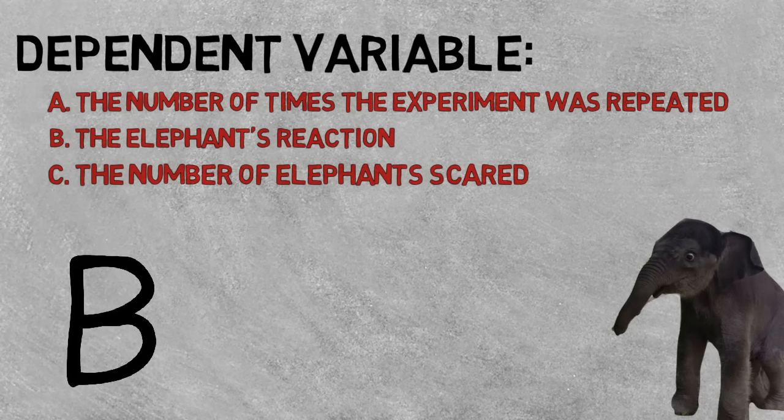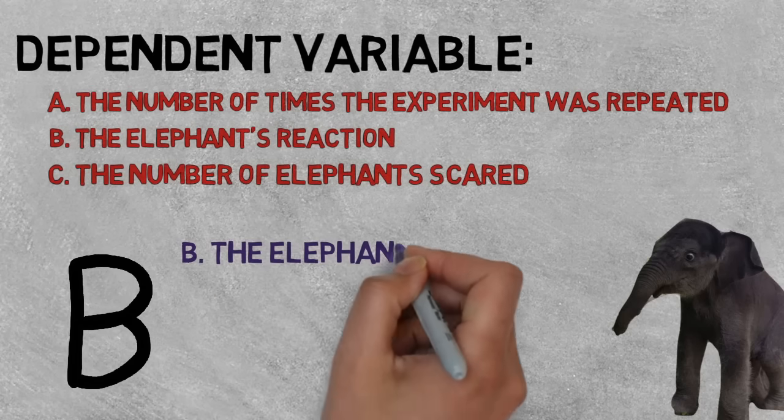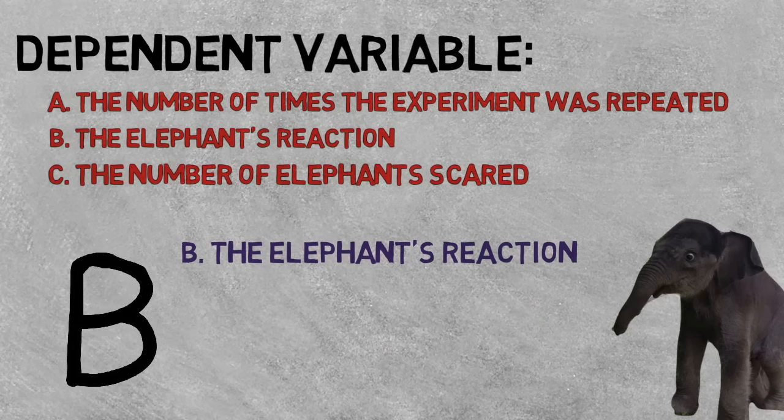The correct answer is B, because it is the reaction of the elephant that was being measured each time the experiment was carried out.